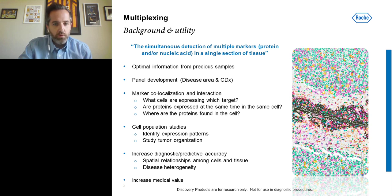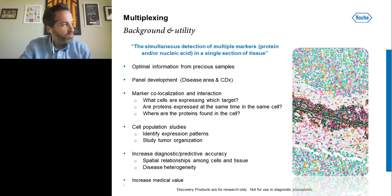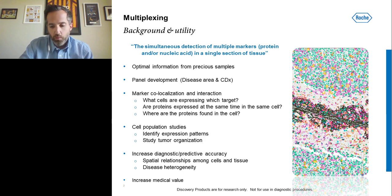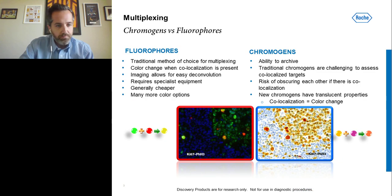We can look at cell population studies, particularly examining expression patterns and the organization of the tumor, all leading towards increased diagnostic and predictive accuracy. A lot of the multiplexing work we're seeing is being performed within the research sector, but we hope within the next few years this will move forward towards the clinical space, increasing medical value for clinical diagnostics.